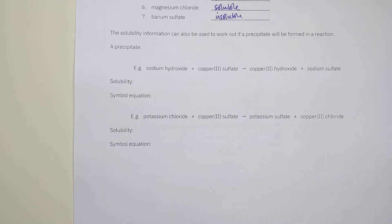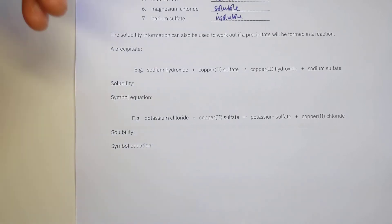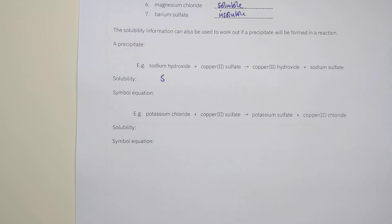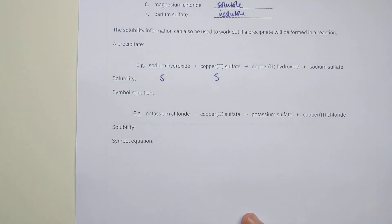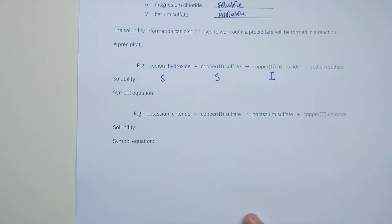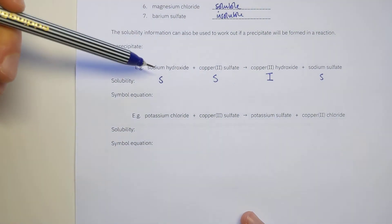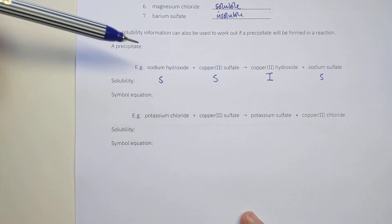We can predict precipitate formation by looking at the products of an equation and checking if any are insoluble. For example: sodium hydroxide plus copper(II) sulfate makes copper(II) hydroxide plus sodium sulfate. Sodium hydroxide is soluble; copper(II) sulfate is soluble as most sulfates are. Copper(II) hydroxide — most hydroxides are insoluble, including copper hydroxide, so that gets an I. Sodium sulfate is soluble.